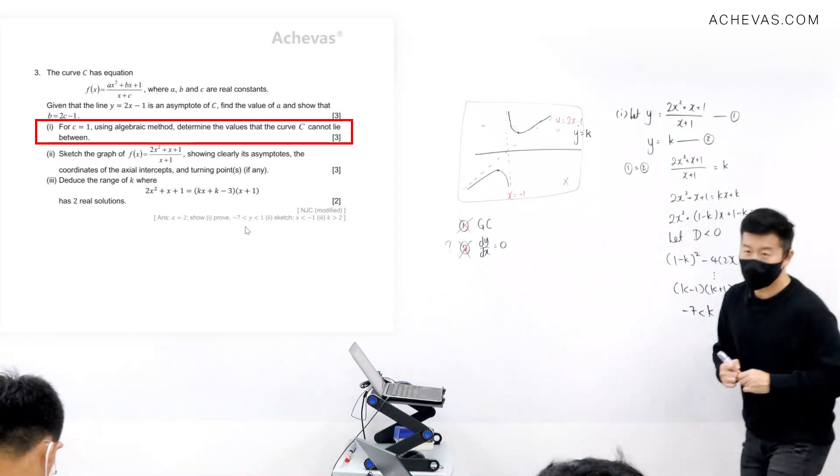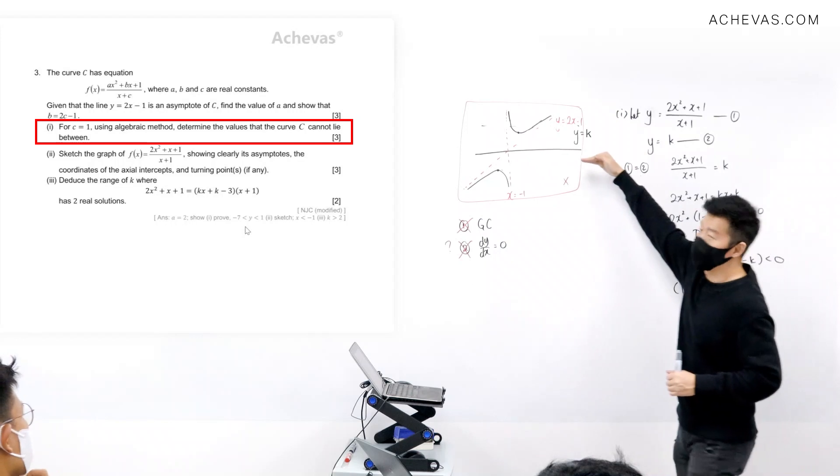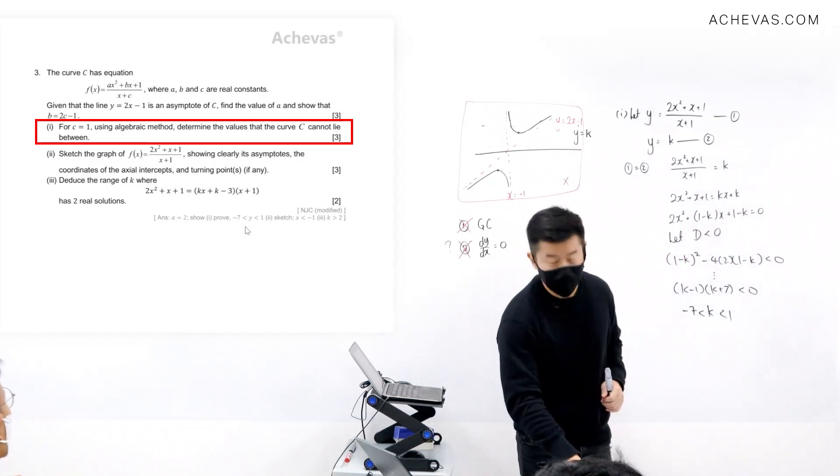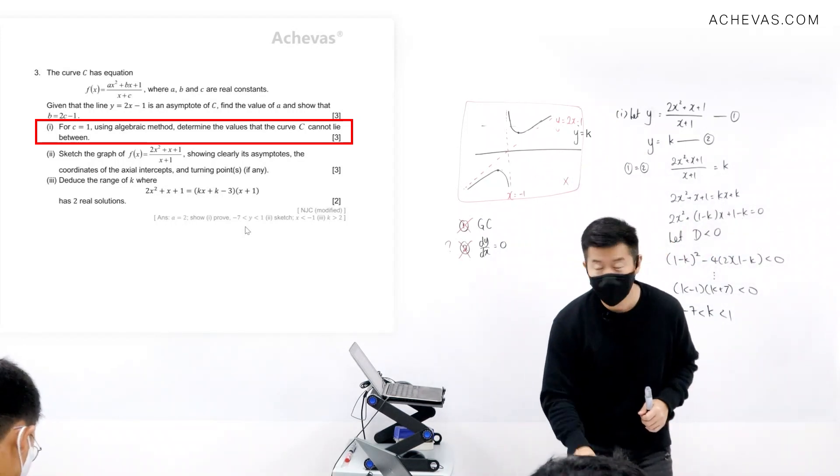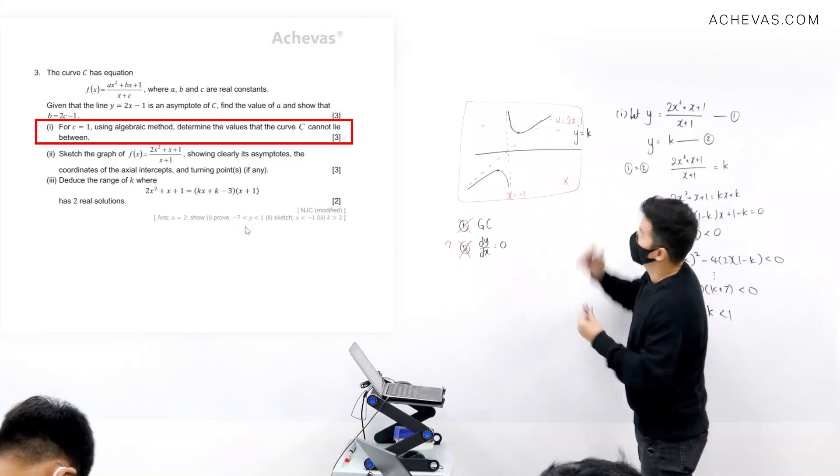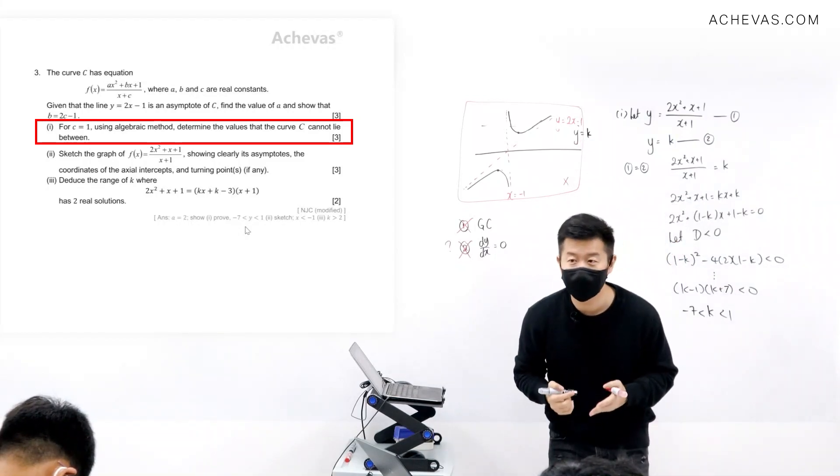And that is the beauty of why we started off with a horizontal line and not any other line. Because this horizontal line represents what? This horizontal line represents y.